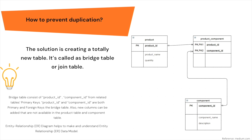To prevent duplication from many-to-many relationships, the solution is generally to use a bridge table or join table. For example, a product component table is a bridge table between product and component tables - taking component ID from one side and product ID from the other. Between product and product component there is a one-to-many relationship, and similarly between product component and component. Entity relationship diagrams help make and understand entity relationship data models - always try to draw your ER diagram first to better understand the structure.